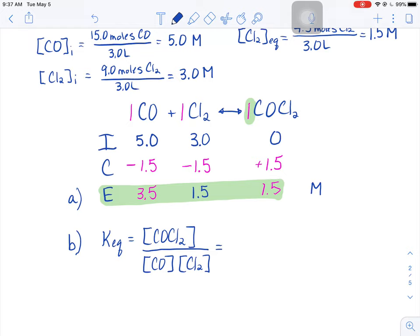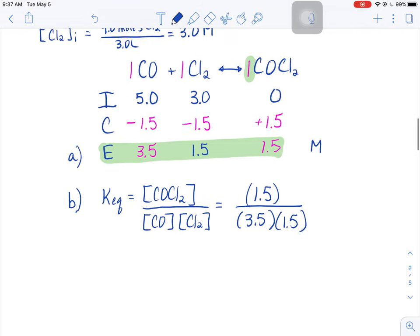Now we're going to substitute in those equilibrium expressions, the highlighted green line there. I know that the COCl2 concentration is 1.5. And on the bottom, carbon monoxide is 3.5. Chlorine is 1.5. And I throw that in my calculator and solve, and I get a value of 0.29. There's my equilibrium constant.